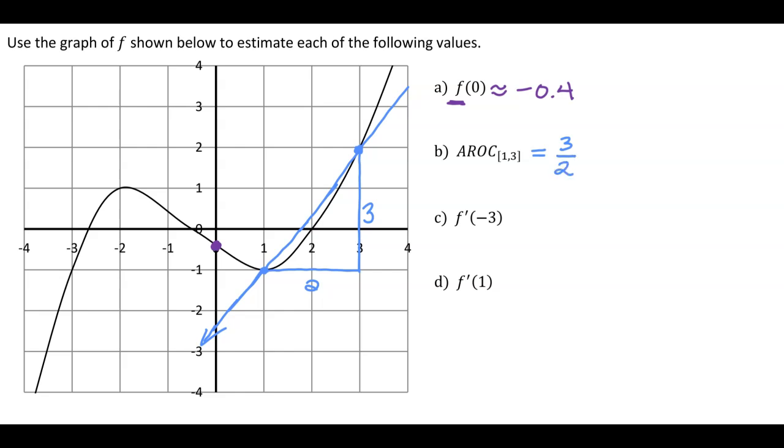Next is f'(-3), which is the same thing as the instantaneous rate of change at x equals -3, or the slope of a tangent line at x equals -3. So here's my point. Given a graph, this will still be an estimate, but we're going to do our very best. I probably should have snagged a straight line to do this, to draw our line so that it appears to be a tangent line.